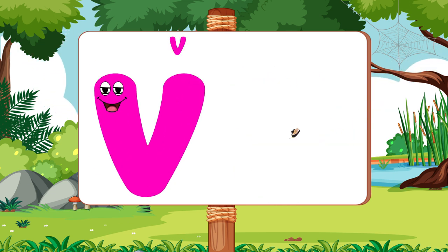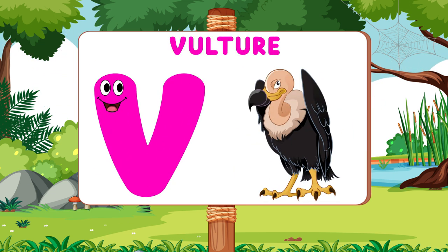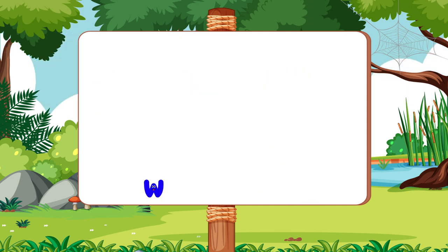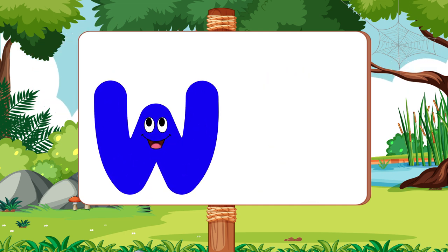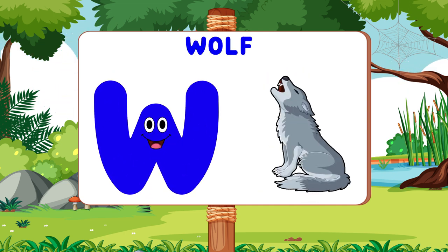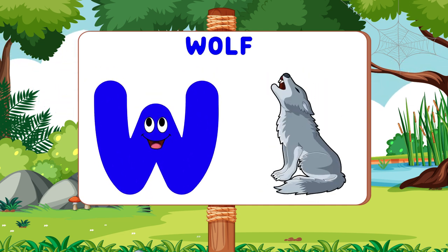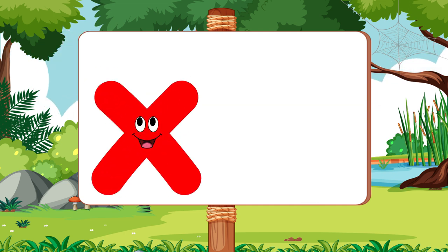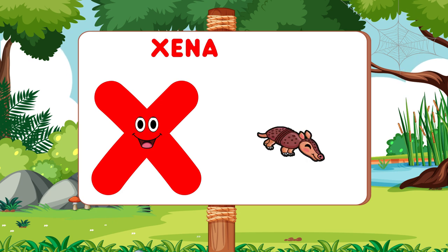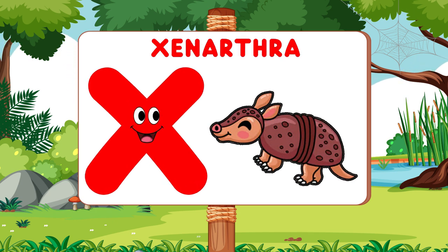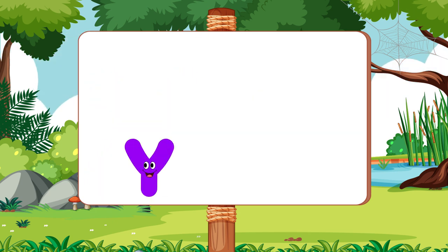V is for Vulture. V, V. Vulture. W is for Wolf. W, W. Wolf. X is for Xenarthra. X, X. Xenarthra.